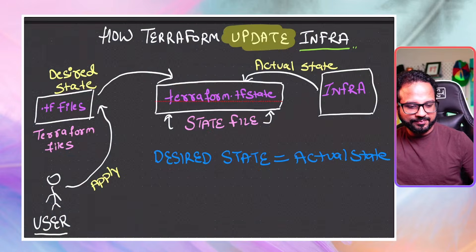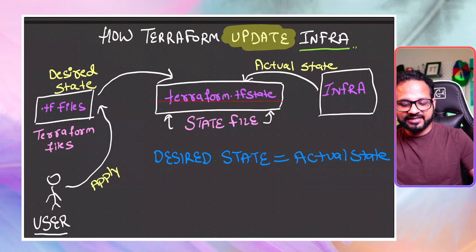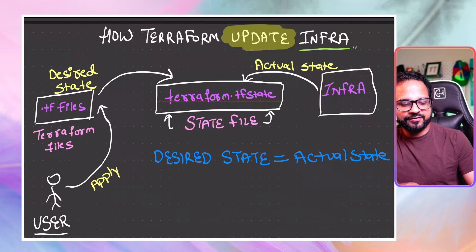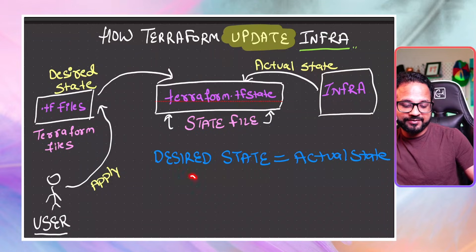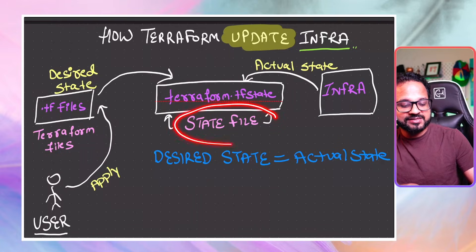Let me show you a diagram. As I've told you before, Terraform makes changes to the infrastructure based on the desired state and actual state. The desired state is what is there in your .tf files - I have an Azure RM resource group and an Azure storage account in my tf file. Now, what is the actual state of infrastructure? How would Terraform know that these resources have not already been created, or what changes need to be made? For example, when we updated from GRS to LRS, how would Terraform know the current value is GRS - does it go every time to the infrastructure and check? It does that with the help of a state file.